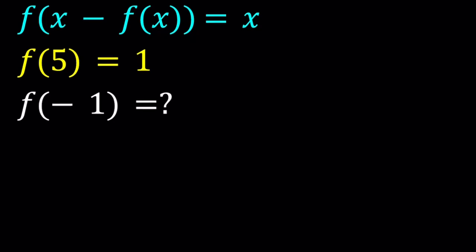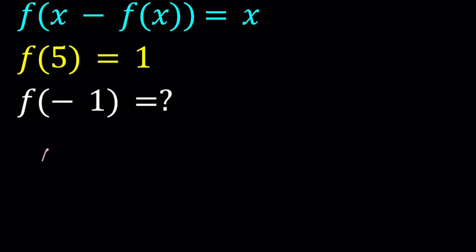So since f of 5 is given, let's start by replacing x with 5. And by the way, this is going to be a quick video. So this gives us f of 5 minus f of 5 equals 5.